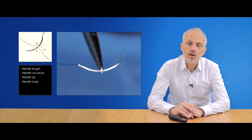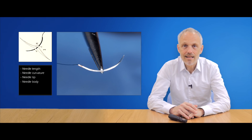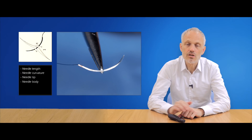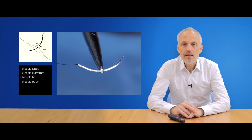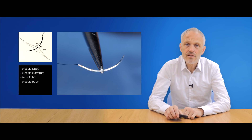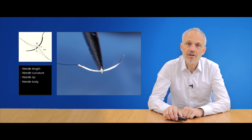When suturing, we must grasp the needle at its middle part — never at the tip to avoid damage, and never at the lock where the suture strand is attached. In some needles the strand is attached by clamping, while in others there is a laser-drilled hole where the suture strand is adhesively fixed.